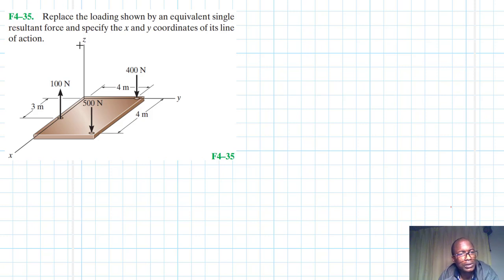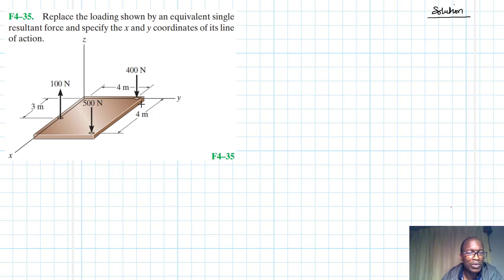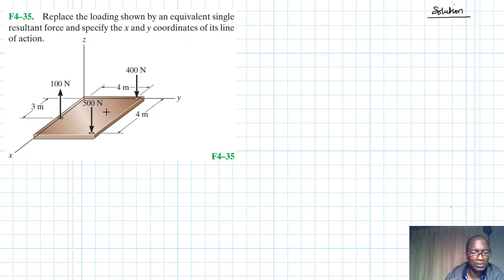Welcome to this screencast. The problem reads: replace the loadings shown by an equivalent single resultant force and specify the x and y coordinates of its line of action. This problem comes from Engineering Mechanics Statics, 13th edition by Hibbeler. We have a slab and we need to find the equivalent single resultant force and its line of action coordinates.